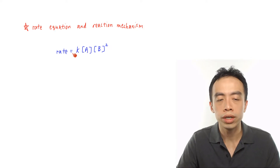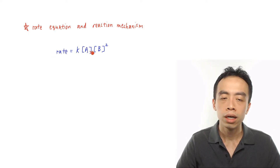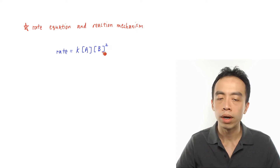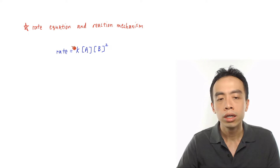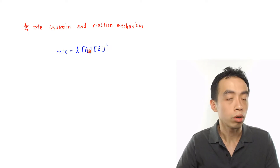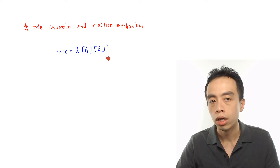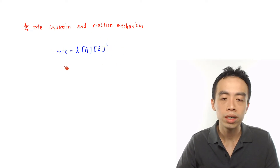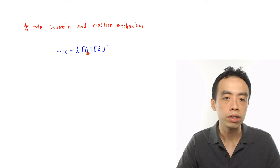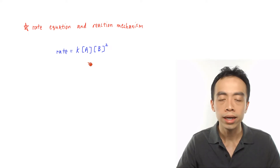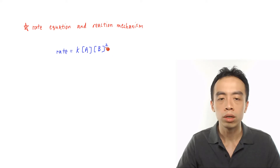For example, if I look at this rate equation here — rate equals a rate constant k multiplied by concentration of A to the power 1 and concentration of B to the power 2 — then the order with respect to A is order 1 and the order with respect to B is order 2. So what this rate equation is telling me is the number of A involved in the rate determining step is 1 and the number of B involved is 2.